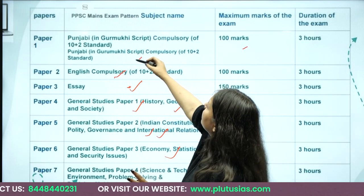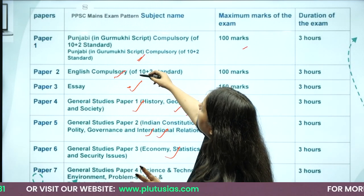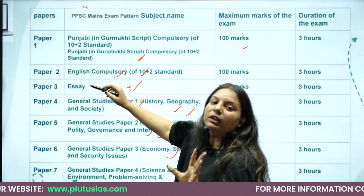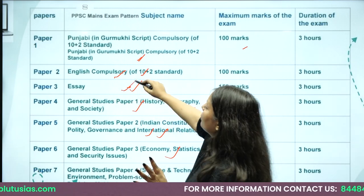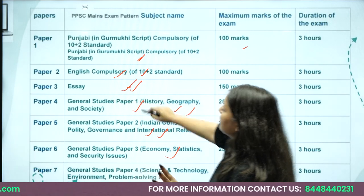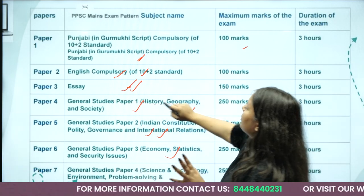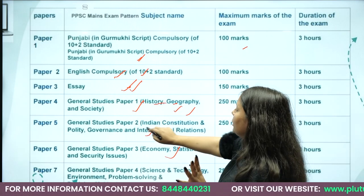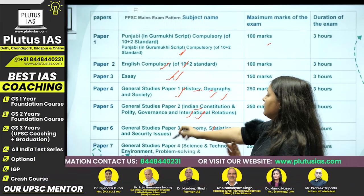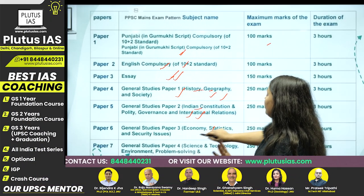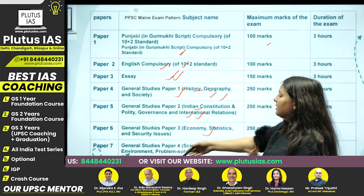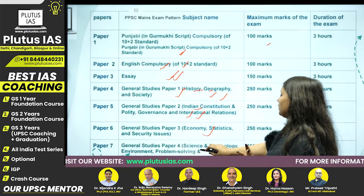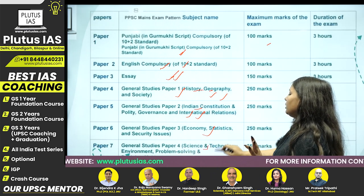The Main exam includes the following papers: the first paper is Punjabi, the second is English (at 10+2 level). Then Paper 1 covers History, Geography and Society; Paper 2 is Indian Constitution and Polity; Paper 3 is Economy, Statistics and Security Issues; and Paper 4 is Science and Technology.